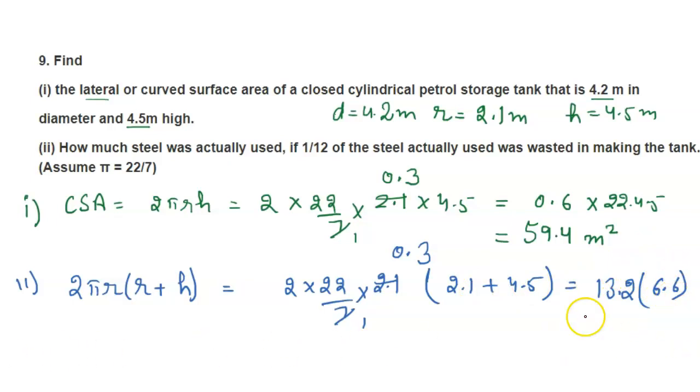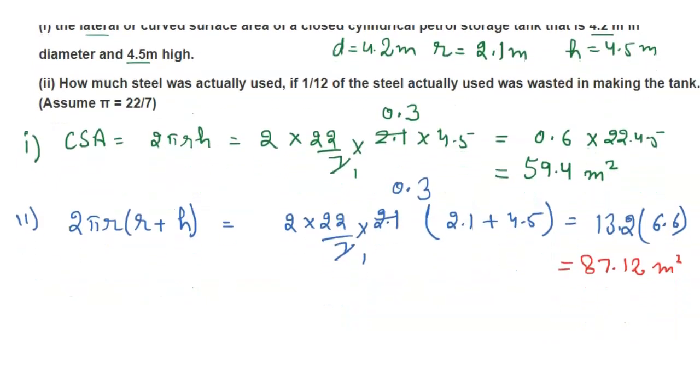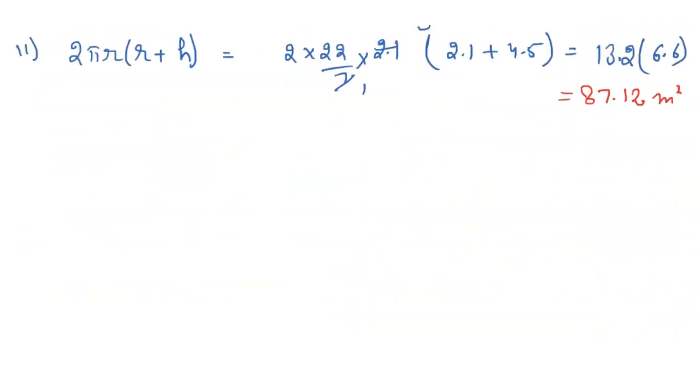By multiplying this we will get 87.12 meters squared. Now let the total material used be S, and 1 upon 12 is wasted. Let total material used is equal to S.